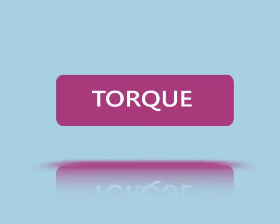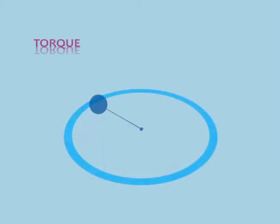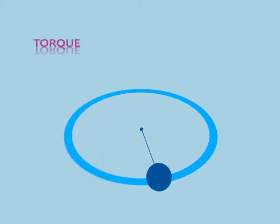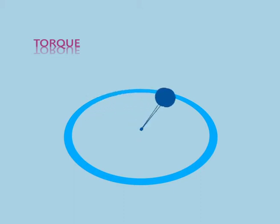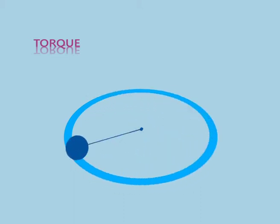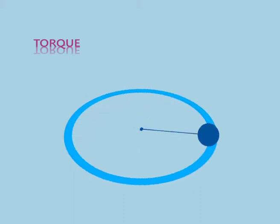Torque, moment, or moment of force (see the terminology below) is the tendency of a force to rotate an object about an axis, fulcrum, or pivot. Just as a force is a push or a pull, a torque can be thought of as a twist to an object.